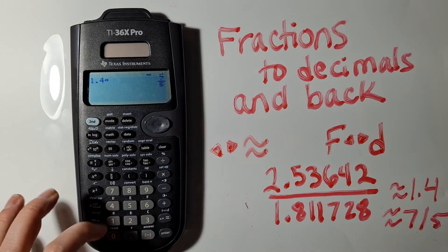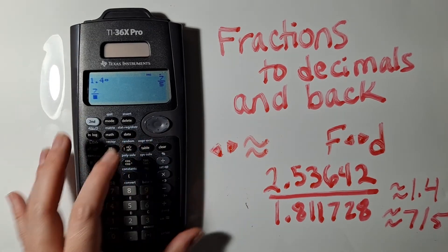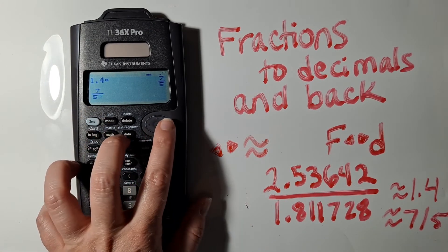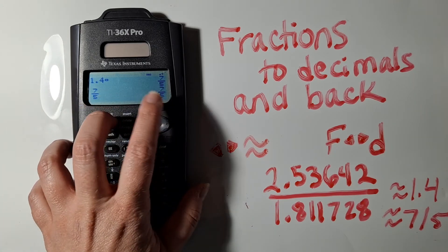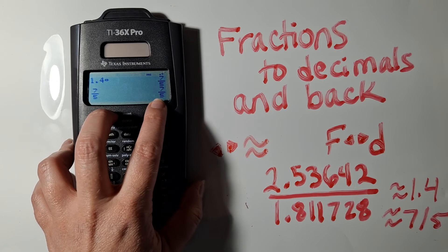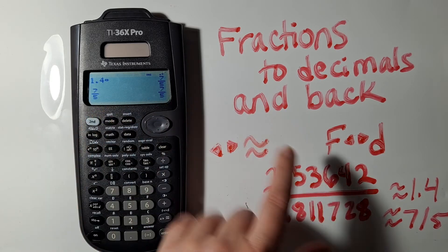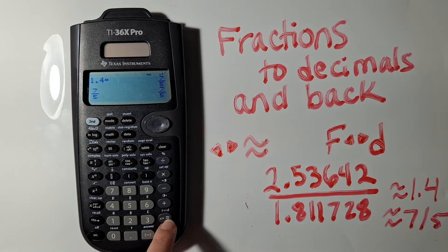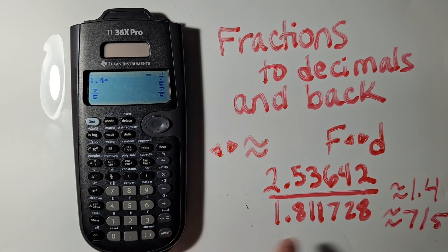I can also type in a fraction like 7 fifths. If I type it in like this then when I hit enter it displays it to me again in fraction format. If I want to get it back into a decimal format I'm going to need to go to second and then that approximately equals button to do the F to D.